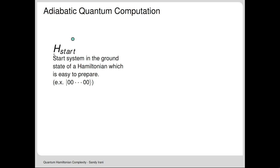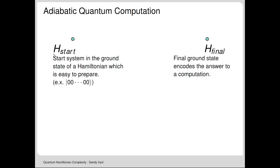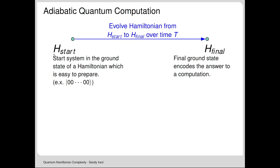In adiabatic computation, you can imagine physically doing this: you start with a system whose Hamiltonian has an easy-to-prepare ground state—say, all spin-down. The target Hamiltonian is one whose ground state answers some computational problem—for example, the computational Hamiltonian we've been discussing. The idea is to slowly evolve the system, changing the Hamiltonian from H_start to H_final. You can imagine different paths through Hamiltonian space; the most common is a straight interpolation between the two.